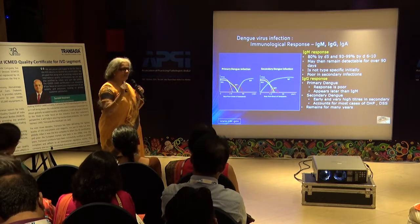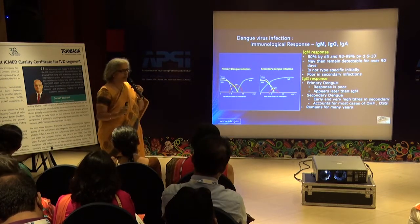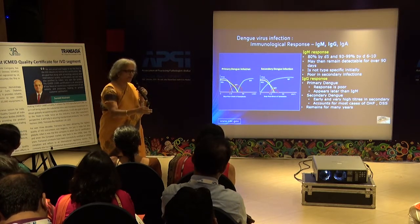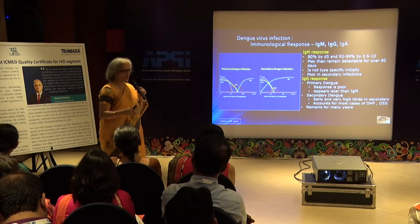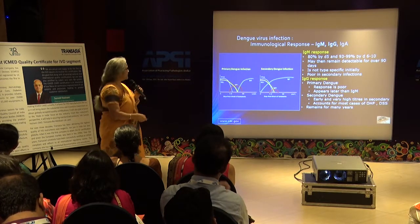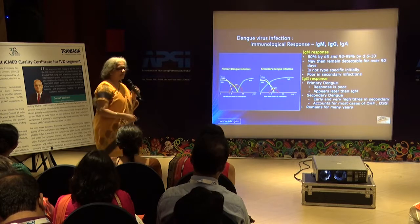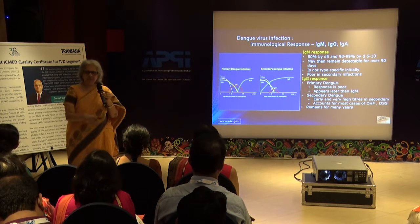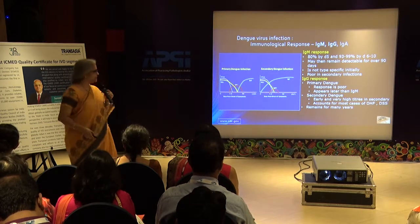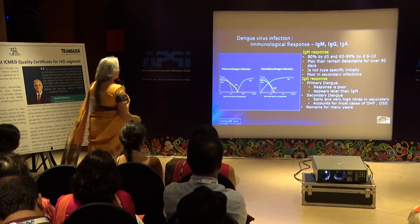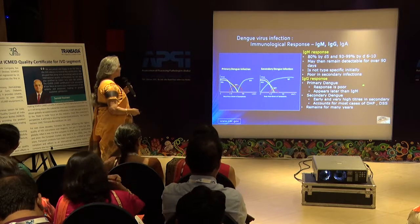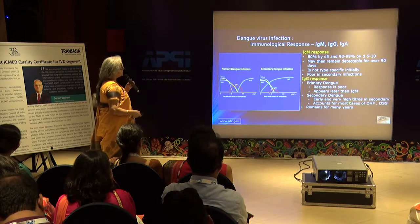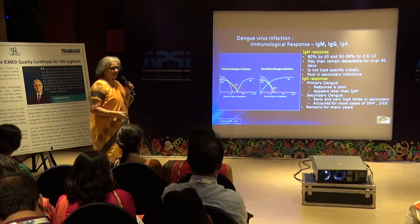In secondary infection, IgM antibodies are negative. A clinically compatible disease with IgM negative — yes, that can happen. And presence of IgM, since it persists for 90 days, does not mean current infection — it means infection within the previous three to four months. The IgG response is poor in primary dengue but early and very high in secondary dengue. When a patient presents with DHF or DSS, it's more important to look for IgG antibodies in addition to IgM.